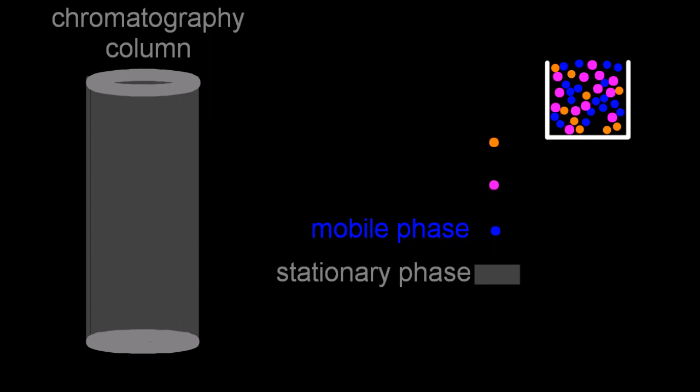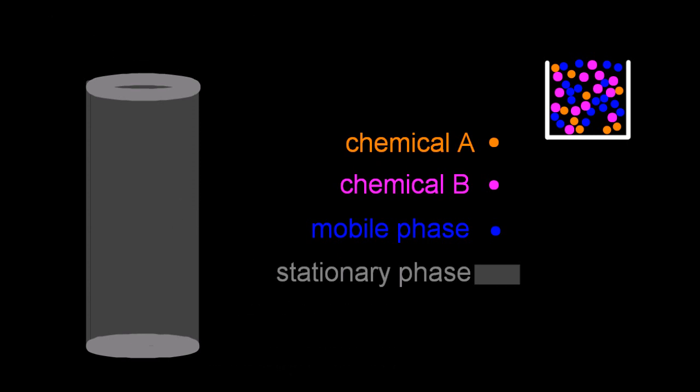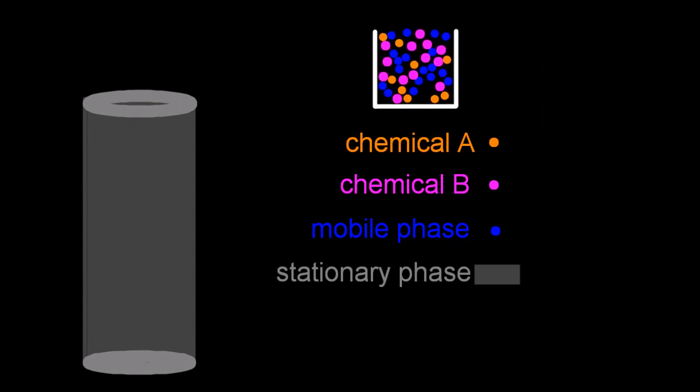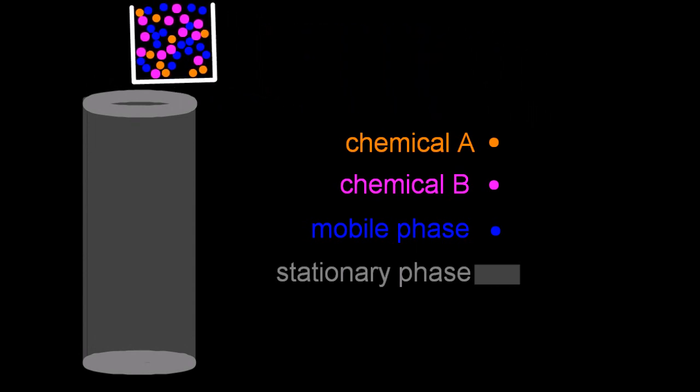And the chemicals that I'd like to separate, in this case chemicals A and B, are dissolved in what's called the mobile phase. I'm going to pour those chemicals into that column. Now the idea of chromatography is to split chemicals apart from each other that are in a mixture.